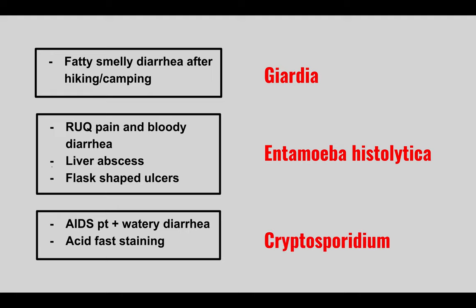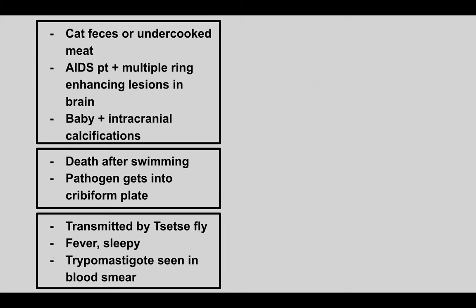This is Cryptosporidium. The next patient has a history of cat feces or undercooked meat ingestion. An AIDS patient can get multiple ring-enhancing lesions in the brain, and a mother who is infected can have a baby with intracranial calcifications. This is Toxoplasma — look out for multiple ring-enhancing lesions in an AIDS patient or a baby with intracranial calcifications.